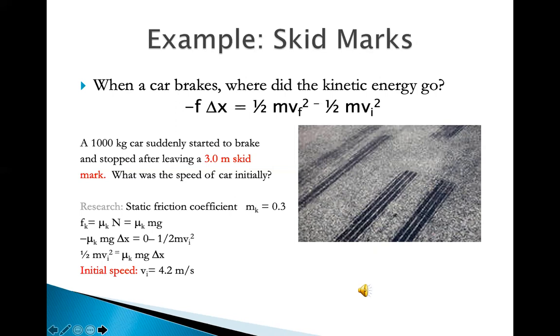So by looking at the skid marks, the longer skid marks represent a larger speed, and the shorter skid marks represent a smaller speed.